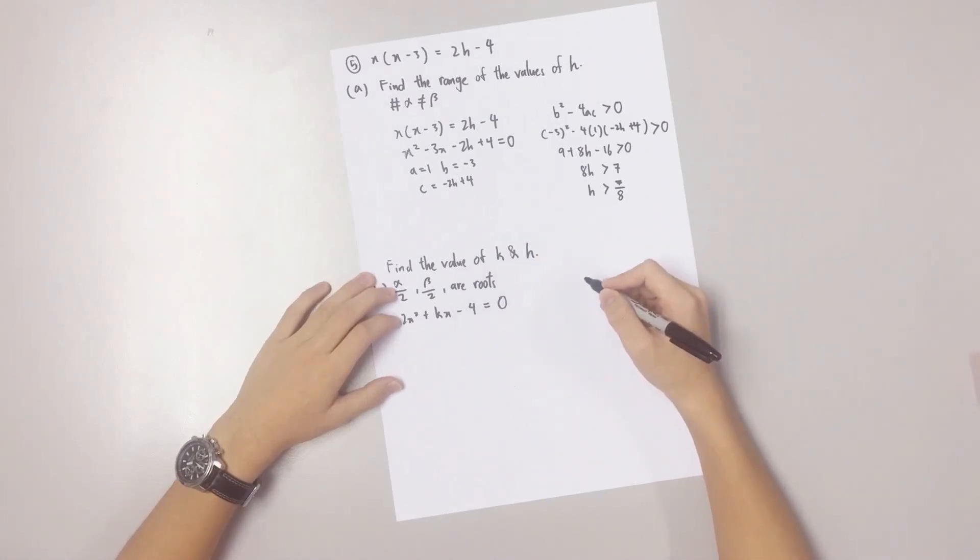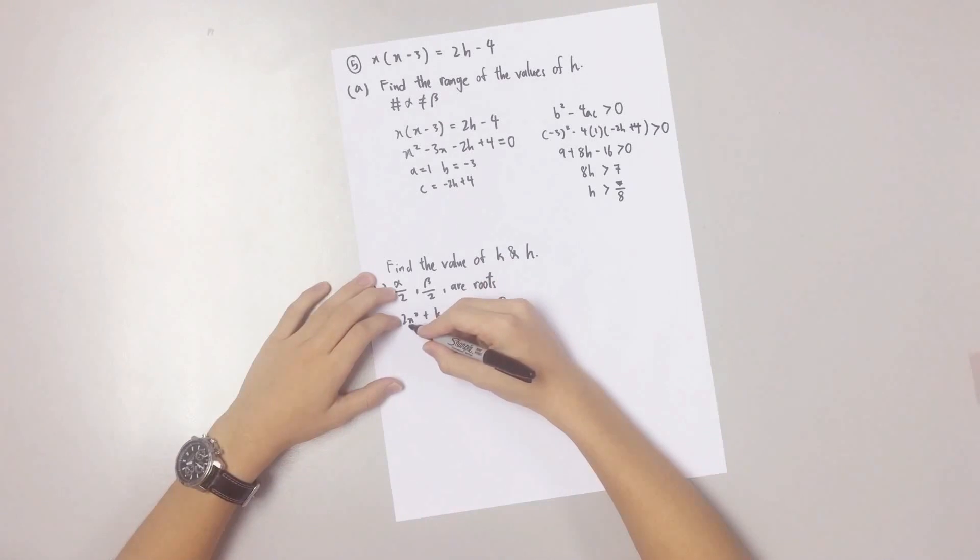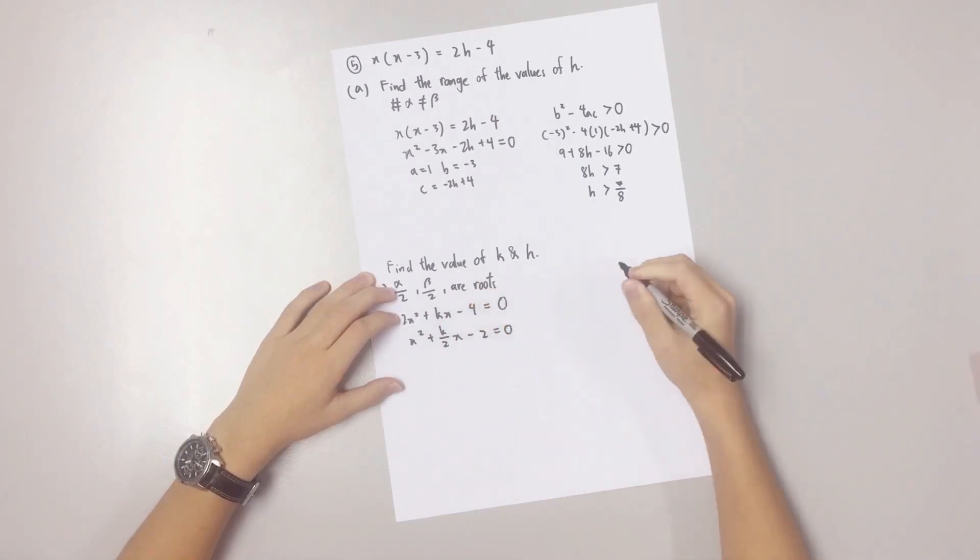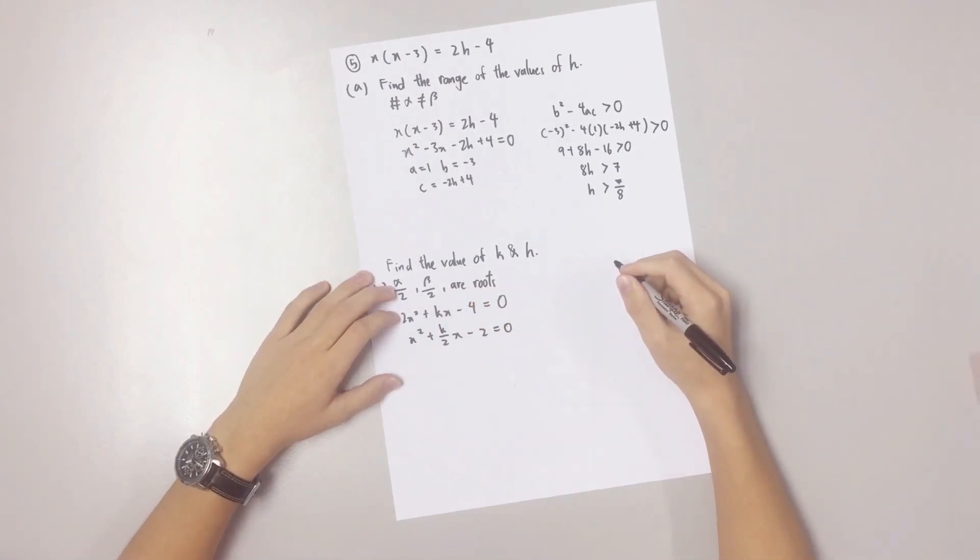First, you simplify the equation to make sure that A is 1. We use the sum of the roots to find K.